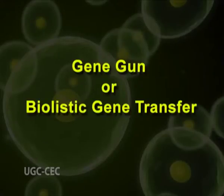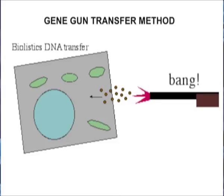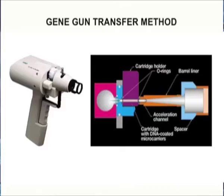Gene gun or biolistic gene transfer: This method was originally devised in 1963 for gene transfer in plants and is now also applied for animal cells. It is used for in vitro as well as in vivo transfer of DNA inside the cell. DNA-coated gold or tungsten particles are bombarded into the cell, accelerated by high voltage or pressurized gas. This technique enables transfection of a variety of macromolecules such as nucleic acids and proteins, permits entry of large-size DNA and more than one gene sequence into target cells, and can deliver nucleic acid to both dividing and non-dividing cells. However, mortality rate is high, so large numbers of target cells are required.